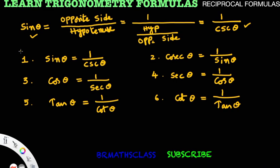We use these formulas very frequently. To summarize: sin theta equals 1 by cosecant theta; cosecant theta equals 1 by sin theta; cos theta equals 1 by secant theta; secant theta equals 1 by cos theta; tan theta equals 1 by cot theta; cot theta equals 1 by tan theta. If you remember the reciprocals of sin theta, cos theta, and tan theta, there is no need to separately remember the remaining 3 formulas — you can write them easily.